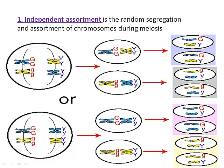So when this cell divides, the chromosome bearing the big G ended up with the chromosome bearing the big Y, giving us a gamete with big G and big Y. And the other side gives little G and little Y. This time that homologous pair arranged itself in the other orientation, so now we have gametes with big G and little Y, or little G and big Y — alleles have been put in different combinations. And because you have 23 pairs of chromosomes, there are billions of ways that alleles can end up within a gamete.